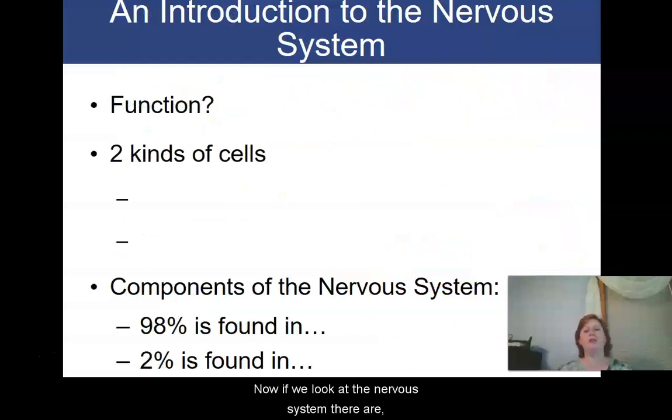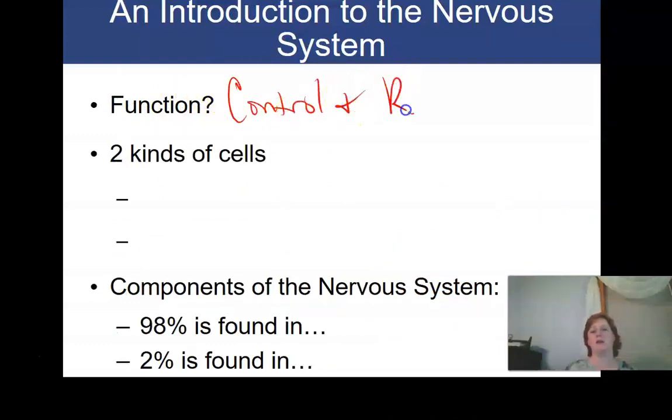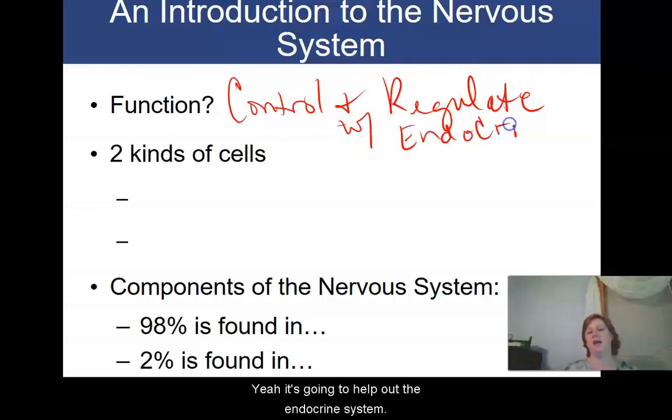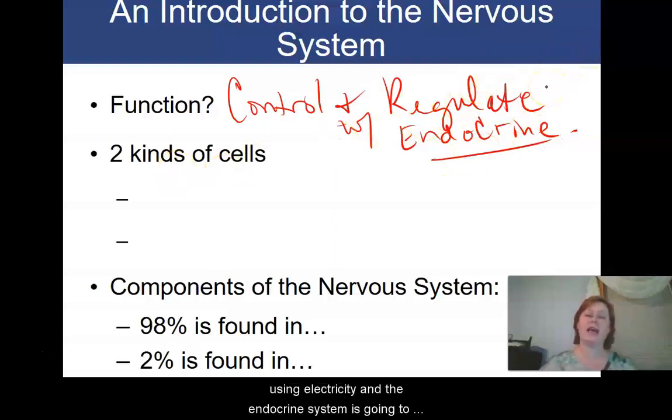Now if we look at the nervous system, it has one primary function, and that is to control and regulate. And it does that along with what other system? Yeah, it's going to help out the endocrine system. So the nervous system is going to control and regulate using electricity, and the endocrine system is going to do that with chemical messengers called hormones.